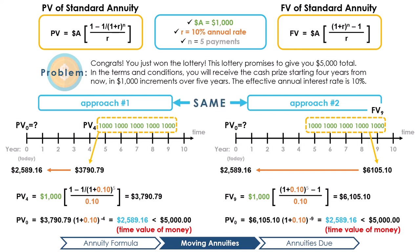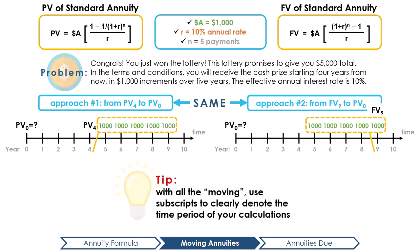In this example, we have learned that we can use the PV and FV formulas to calculate the value of the cash flow at different time periods. Then, through using the concept of compounding and or discounting, in this example discounting, we can essentially move the annuities, which are valuing the exact same stream of cash flows, to calculate its value at different times. Because these calculations involve moving to different times, it's very important to use subscripts to denote what time period the value you're calculating is in.